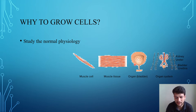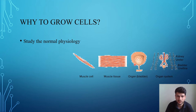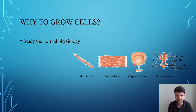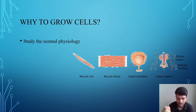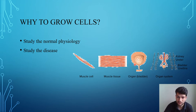First, we can study normal physiology — for example, how insulin is released. We can isolate pancreatic islets of Langerhans, culture them, and study how they release insulin. We can also study disease conditions where there is alteration at the cellular level, and track those alterations in diseased cells, which is much easier than tracking them in a whole organ.